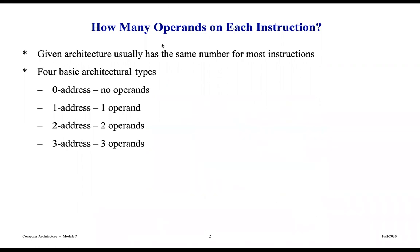How many operands does each instruction use? A given architecture usually has the same number for most instructions. There are four basic architectural types: instructions that have no operands, those that have one, others that have two, and others that have three operands. We can classify these into categories of different types of instructions.